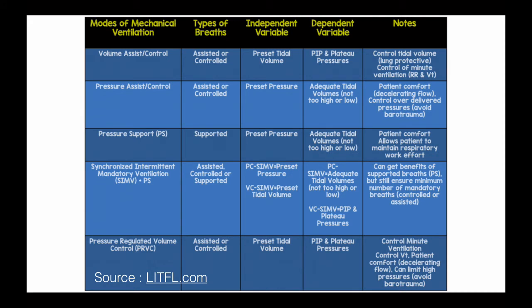There are different types of assist control modes and supportive modes. The only supportive mode in most major ventilators is pressure support. Pressure support gives a preset pressure and a preset FiO2, but does not give you a preset volume and does not augment that pressure — it's a preset pressure that will never change.